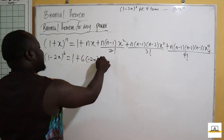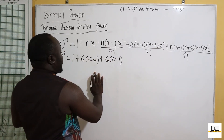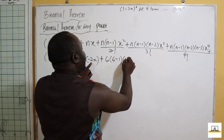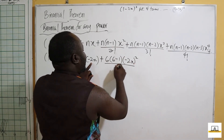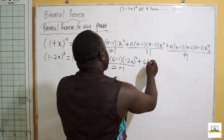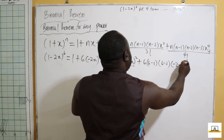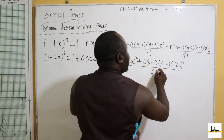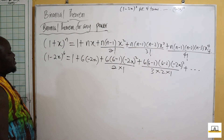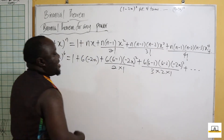The second term: 6 × (−2x). The third term: 6 × 5 × (−2x)² over two factorial. The fourth term: 6 × 5 × 4 × (−2x)³ over three factorial, plus to infinity. We write only the first four terms.